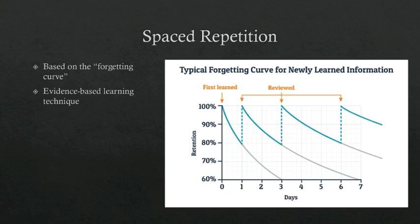Where spaced repetition comes in is this idea that if you review that information on day one, you will bring your retention back up to 100% — because you just reviewed that information with active recall, such as with Anki. You've brought your retention back up to 100%, and now you will again follow the forgetting curve. But this time the curve is not quite as steep. In this example, you lose 20% over two days' time, not one day.